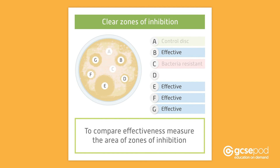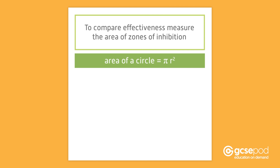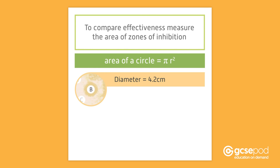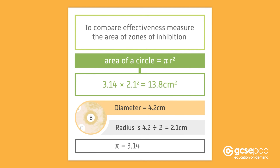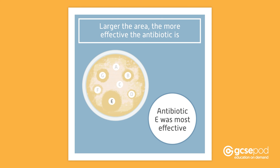In order to compare the effectiveness, you can measure the area of the zones of inhibition. This is calculated by using the formula pi multiplied by the radius of the circle squared. For example, if the diameter of the zone of inhibition around antibiotic B is 4.2 centimetres, the radius is found by dividing the diameter in half, which gives 2.1 centimetres. Pi is 3.14 to 3 significant figures. Using all this in the formula gives the calculation 3.14 times 2.1 squared, which equals 13.8 square centimetres. The larger the area, the more effective the antibiotic is at stopping the growth of the bacteria. You can see that antibiotic E was the most effective.